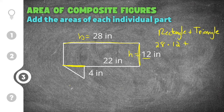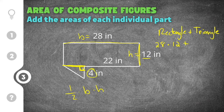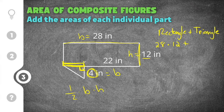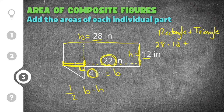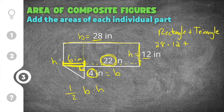The area of the triangle is one-half base times height. The base of the triangle is four. To find the height, we draw a straight line across: the partial distance is twenty-two and the full distance is twenty-eight, so the missing height is twenty-eight minus twenty-two, which equals six inches.